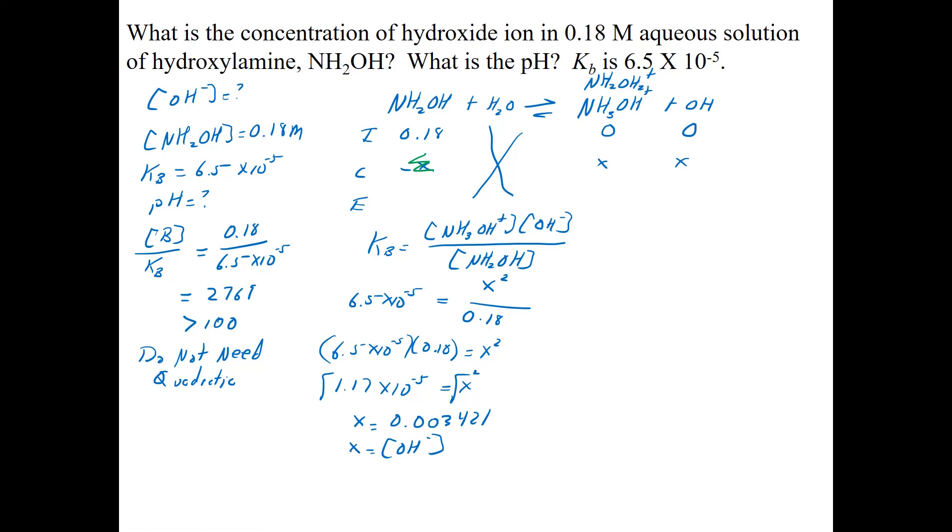So again, to me, the easiest way to go with this is to find the pOH, which is the negative log of hydroxide. So those formulas from the last chapter are very important. Negative log of 0.003421 gives me 2.47. And then pH plus pOH is equal to 14. So pH plus 2.47 is equal to 14. pH is equal to 14 minus the 2.47. And so pH is equal to 11.53.